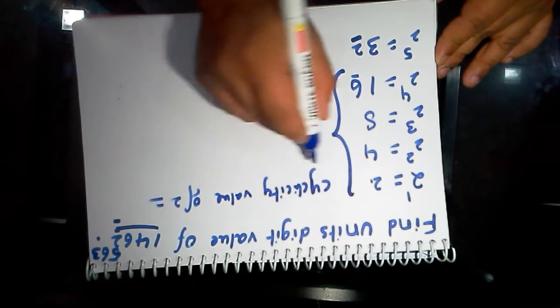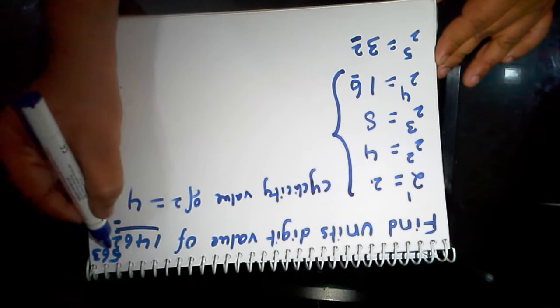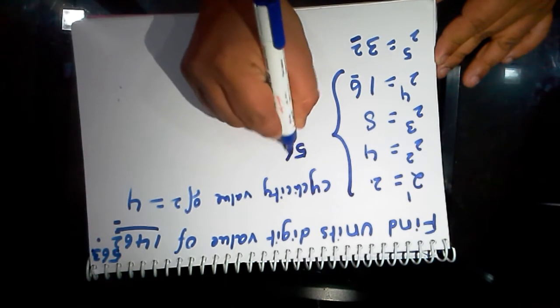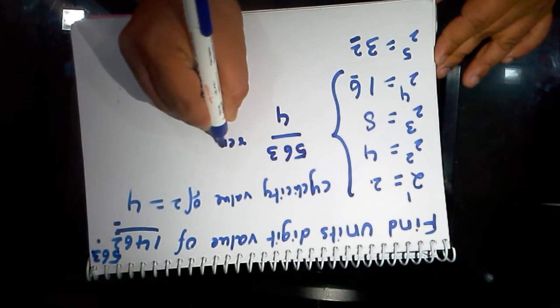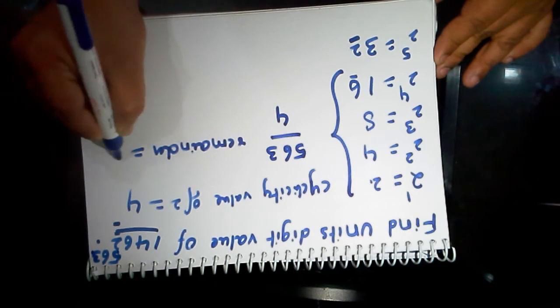Now you need to divide this power value by 4. The power value is 563. 563 divided by 4, the remainder value is 3.